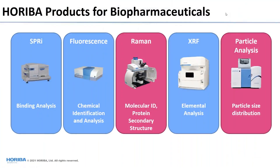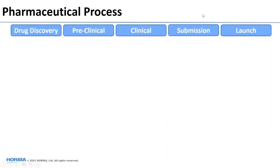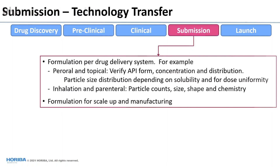We have a number of products for pharmaceuticals and biopharmaceuticals, and we'll cover them both in this series as well as webinars outside this series, including SPRI, fluorescence, which is another chemical ID technique, Raman, X-ray fluorescence for elemental analysis, and particle characterization tools. If you look at the pharmaceutical process, you're really going from drug discovery through preclinical studies, clinical studies, submission, and launch.